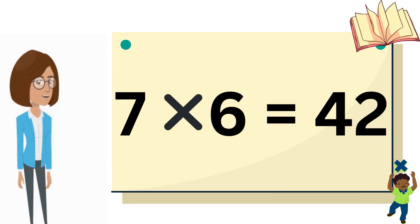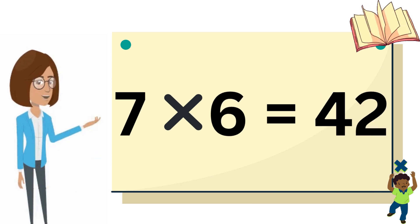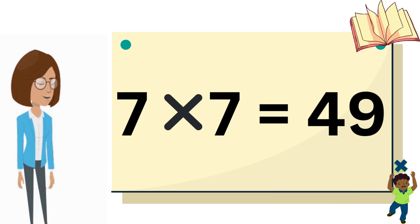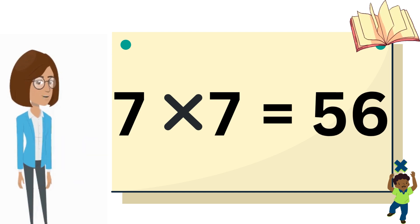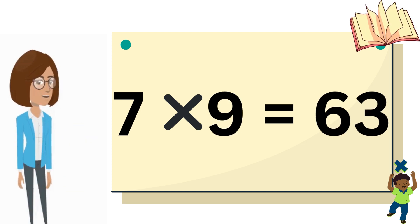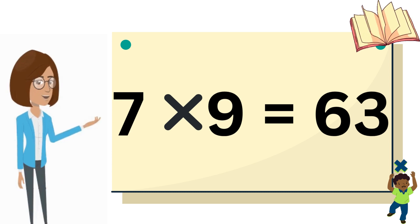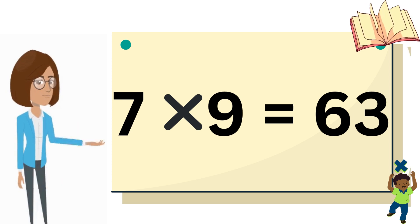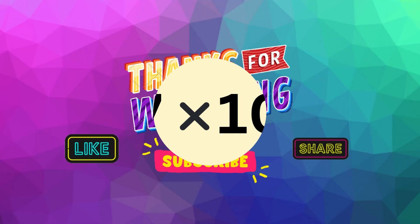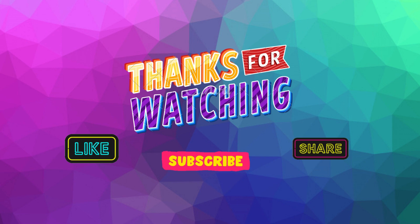Seven sixes are forty-two, seven sevens are forty-nine, seven eights are fifty-six, seven nines are sixty-three, seven tens are seventy. Thanks for watching — please share, like, and subscribe to my channel.